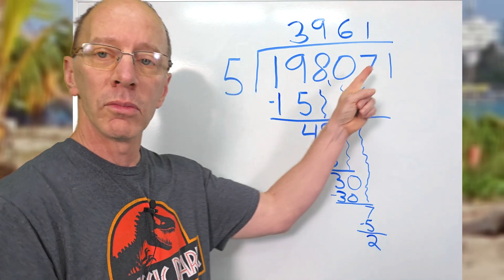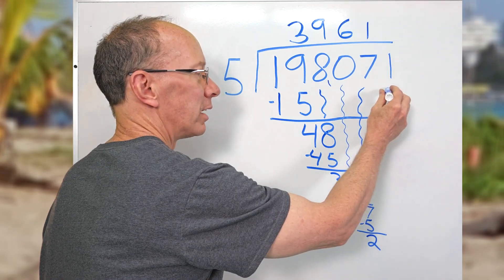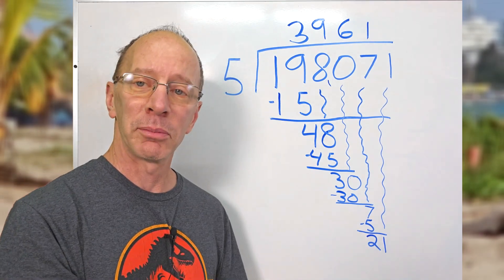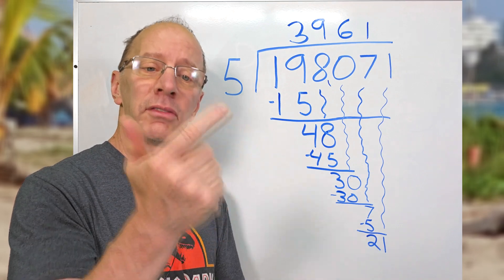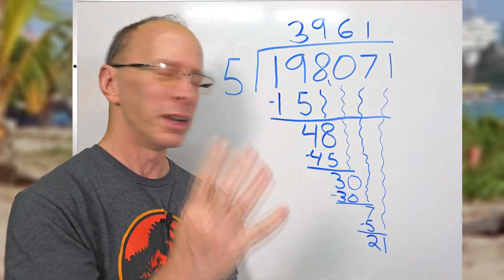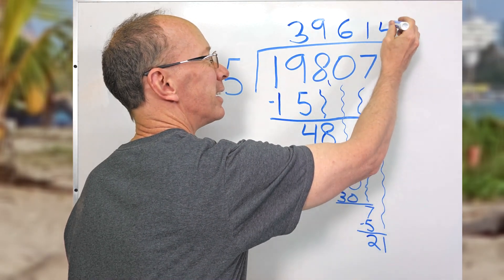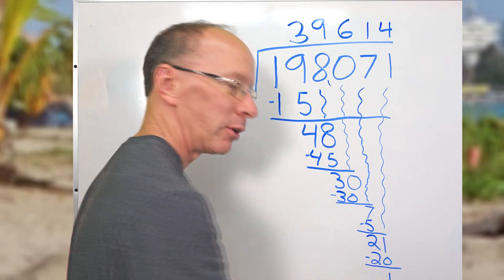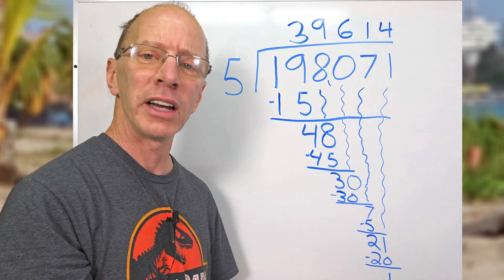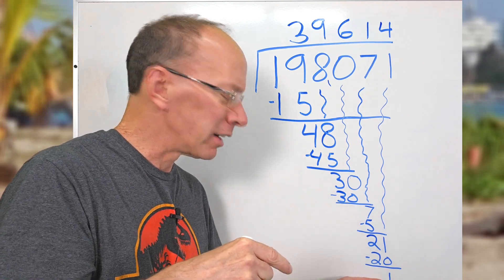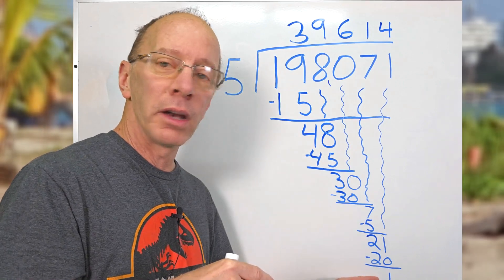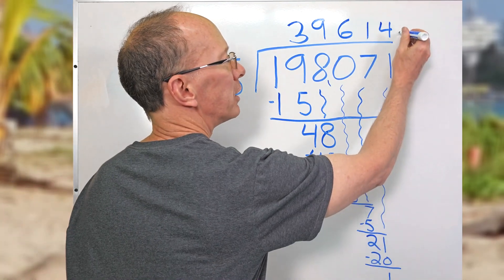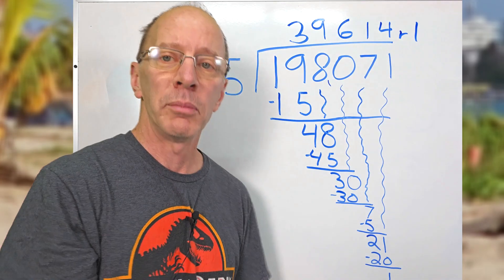And then we drop the next number down all the way down here. So how many times can I put five into 21? Five, ten, fifteen, twenty — four times. Put the four right here. Four times five is 20. Subtract, and we have a one way down at the bottom. I can't put five into one, and there are no more numbers to drop down. That is my remainder. So I'm going to put remainder right here — R, one. Remainder of one. That's it!